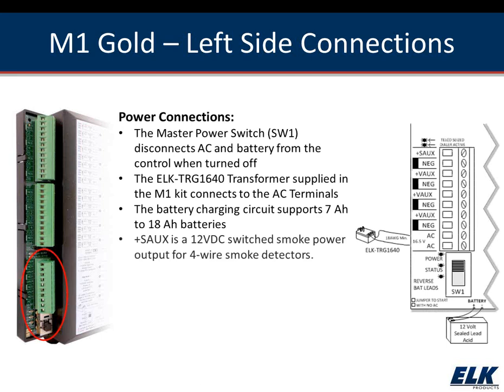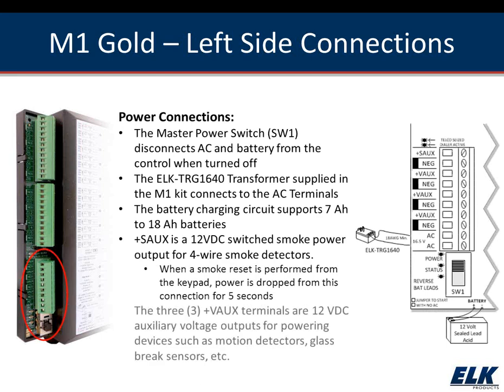These are terminal blocks, so if something happens like water damage that shorts out the board, you can do a panel swap extremely easily - just pull off the terminal blocks, put the new panel in, and press the terminal blocks back in. It makes swapping out a panel extremely easy, and it's one of the really nice features of the M1 itself.